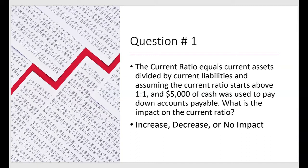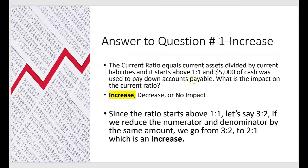At first glance it seems like there's no change — if you take the same amount from the numerator as the denominator, why would the ratio change? But not only is the current ratio going to change, it's going to increase, and it's all because the ratio starts above one to one. One to one means one dollar of current assets for every one dollar of current liabilities. Since it starts above that, let's say it starts at three to two — three dollars of current assets for every two dollars of current liabilities.